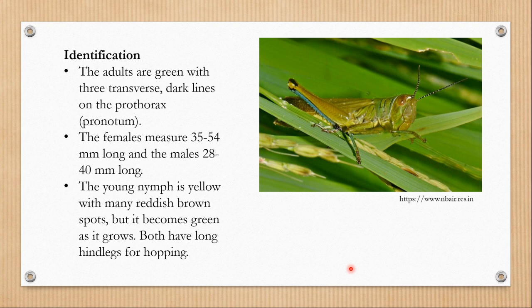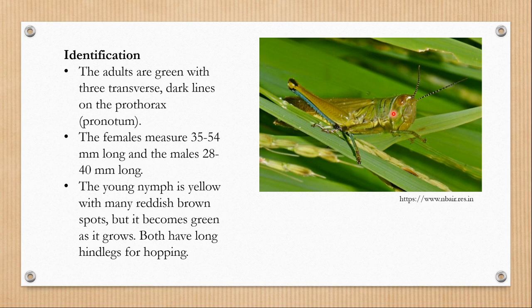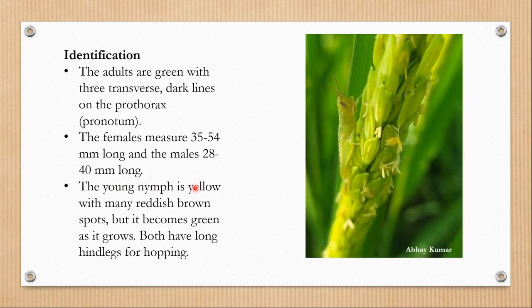How can we identify Hieroglyphus banian? The adults are green with three transverse dark lines on the pronotum of the thorax or the prothorax. You can see this shield-like pronotum which covers the prothorax, and on this pronotum you can see three transverse dark bands, which is the most important identifying feature of Hieroglyphus banian. The females measure up to 35 to 54 millimeters long and the males are 28 to 40 millimeters long. The young nymph is yellow with many reddish-brown spots but it becomes green as it grows. Both have long hind legs for hopping.